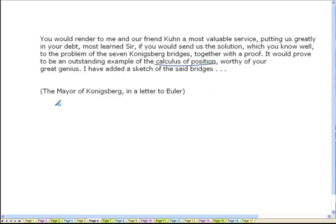So the problem was important enough for the people there that the mayor sent a formal letter to Euler, asking him to solve the problem. Now Euler came up with a proof that such a path which crosses the seven bridges...